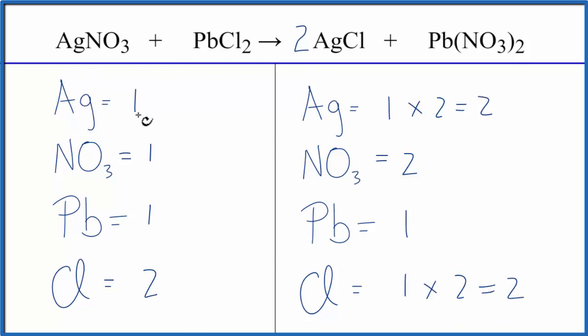Why don't we fix the silvers next? And that looks like that should fix the nitrates as well. Let's try it. So we need two silvers on this side. We put a coefficient of 2, 1 times 2. That gives us two silvers. And then this nitrate here, one of these times 2, that gives us two nitrates. And that's it. This equation is balanced.